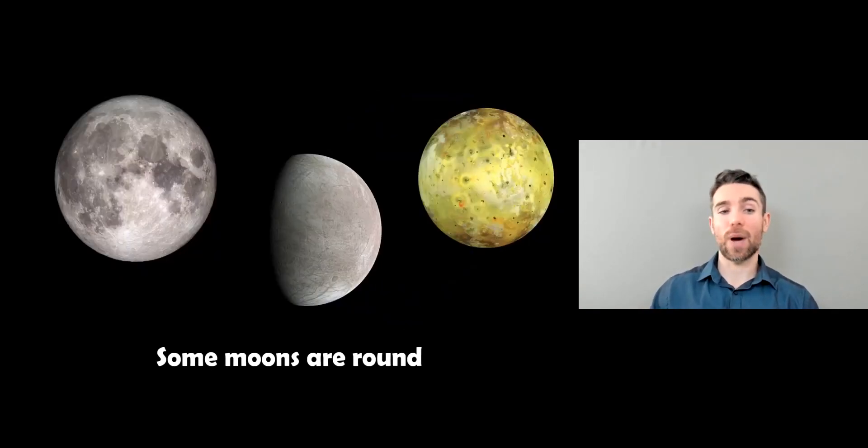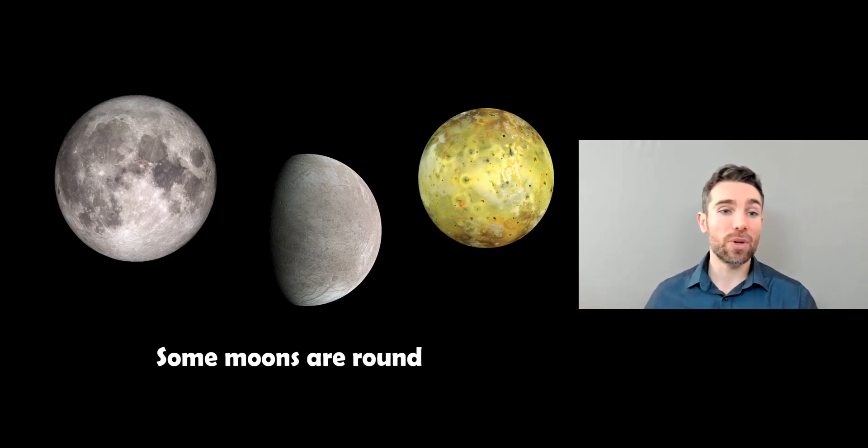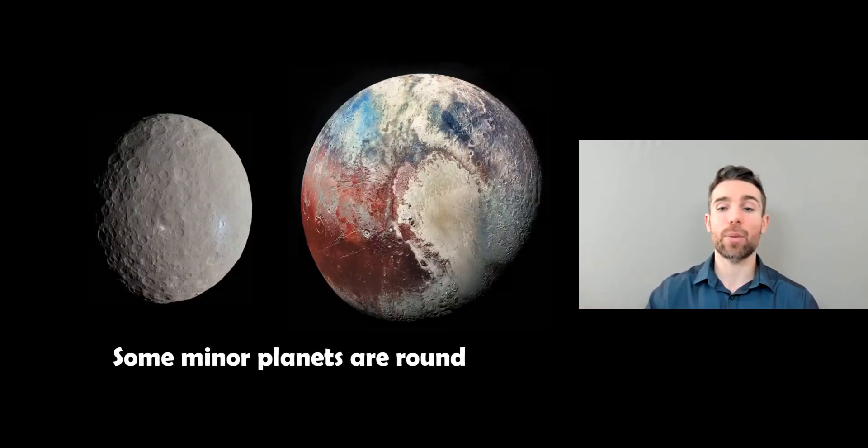Moons as well. So our moon, some of Jupiter's moons, Saturn's moons, these are also round or spherical in shape. So it happens on a range of different scales, smaller scales, larger scales, and even minor planets.